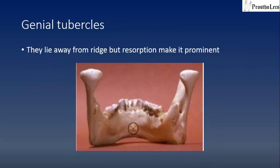Genial tubercles lie away from the ridge and become clinically significant only if too much resorption of the mandible takes place and the tubercles become too prominent and have to be relieved. In this picture showing the lingual view of the mandible, you can see the genial tubercles near the inferior border in the middle of the mandible.